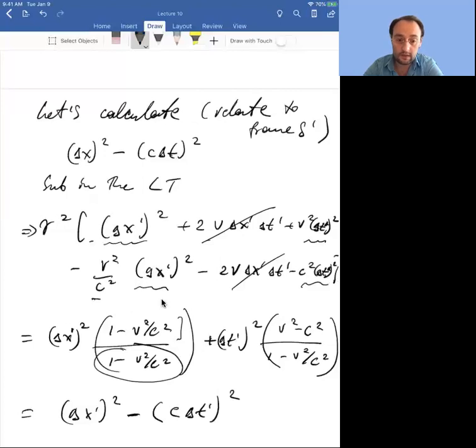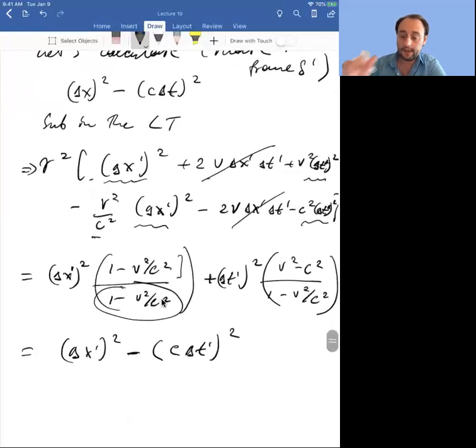We discovered something really interesting. While delta x and delta t do change from frame to frame, while all these effects like time dilation and length contraction take place, there is a quantity that remains invariant. This quantity is called a space-time interval.